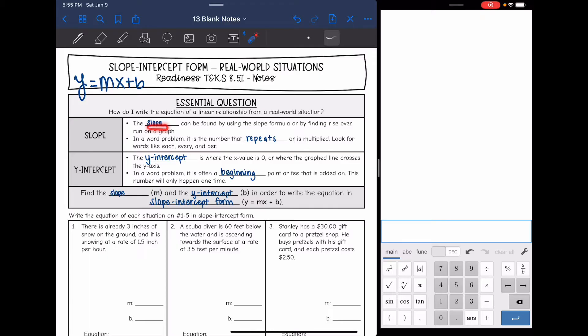So you know that slope can be found using the slope formula and rise over run. We're also going to see word problems today. In word problems, slope is the number that repeats or is multiplied. Look for words like each, every, and per. Those are going to represent the slope because those happen more than once.